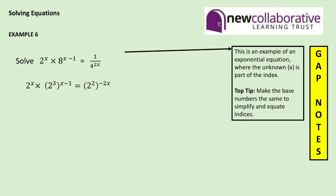So we can say 2 to the power x multiplied by 2 cubed to the power x minus 1. And then the right hand side of the equation we've got 2 squared to the power of negative 2x. So we've now rewritten the equation so that all the base numbers are powers of 2.